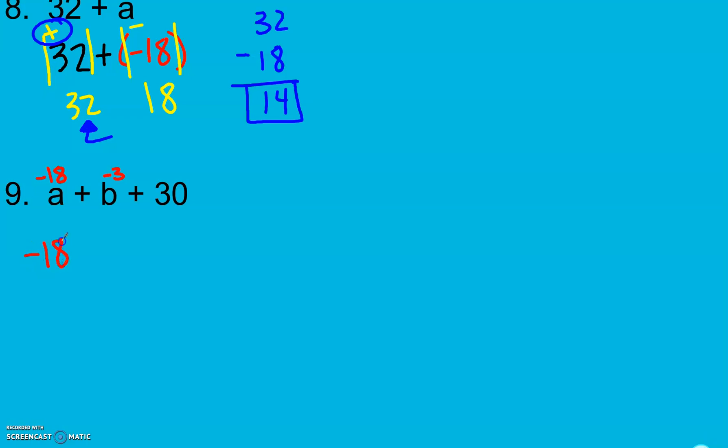I'm going to have negative 18 plus b, which we know is negative 3, plus 30. Here we have three terms, so I'm going to go ahead and do these two at a time.